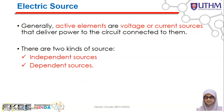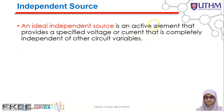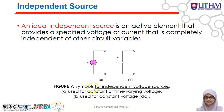An ideal independent source is an active element that provides a specified voltage or current. The key phrase here is 'specified voltage or current that is completely independent of other circuit variables.' In other words, if a voltage source is set to 5 volts or a current source is set to 5 amperes, that value remains the same and does not depend on any other circuit variable.